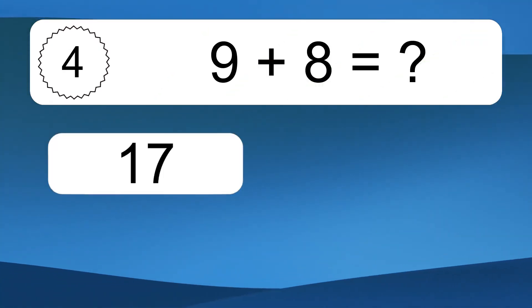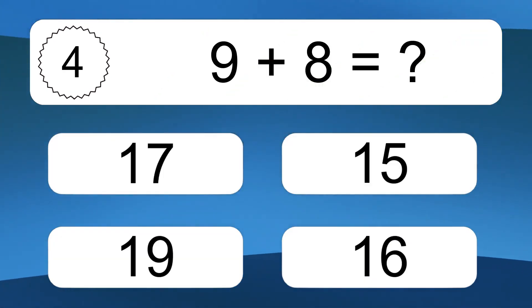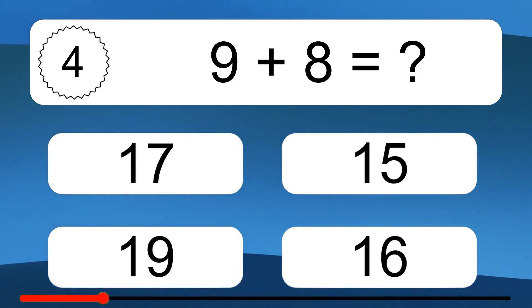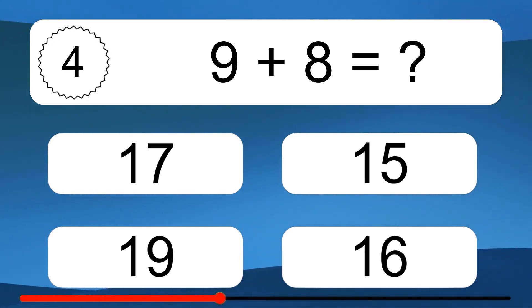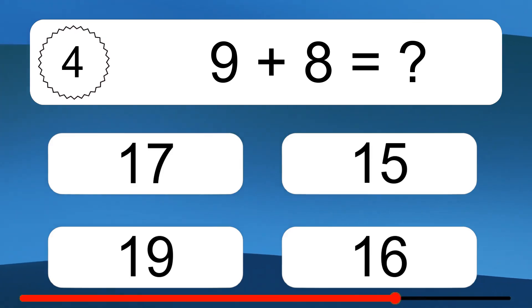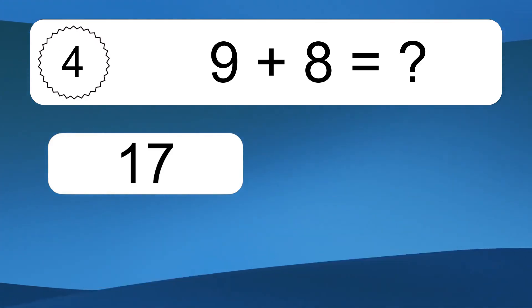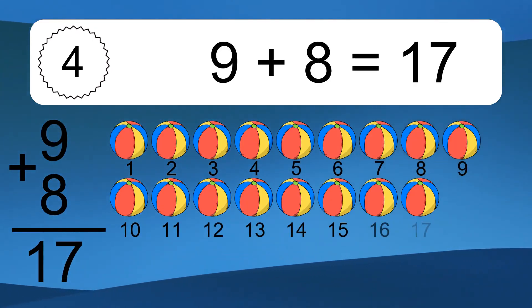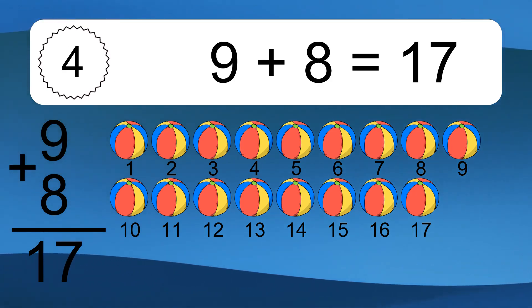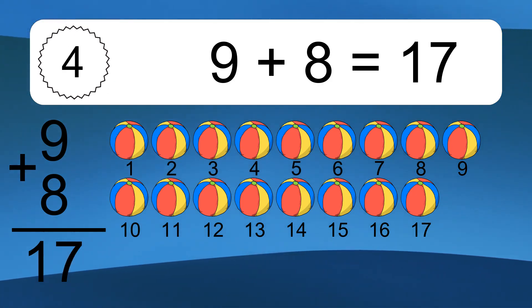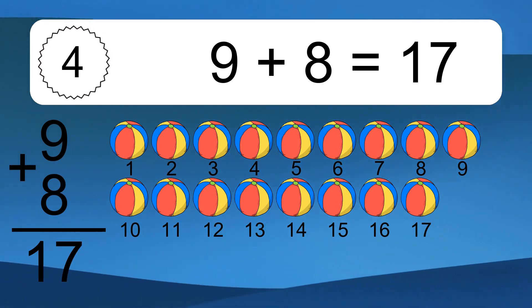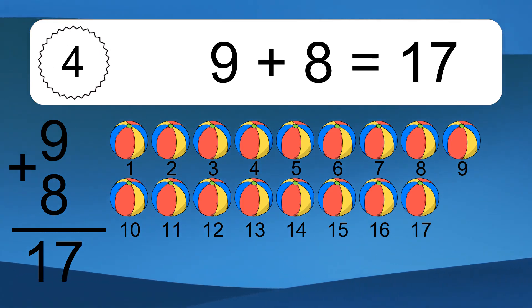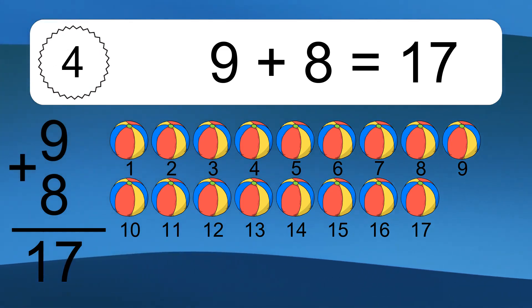9 plus 8 equals what? 9 plus 8 equals 17. Let's count it. 1, 2, 3, 4, 5, 6, 7, 8, 9, 10, 11, 12, 13, 14, 15, 16, 17.